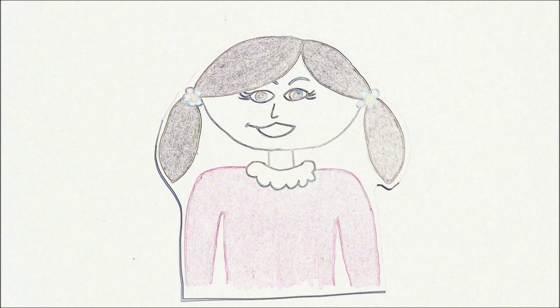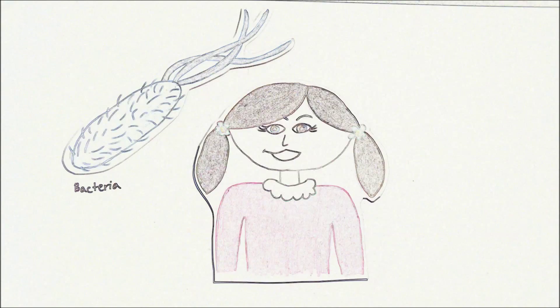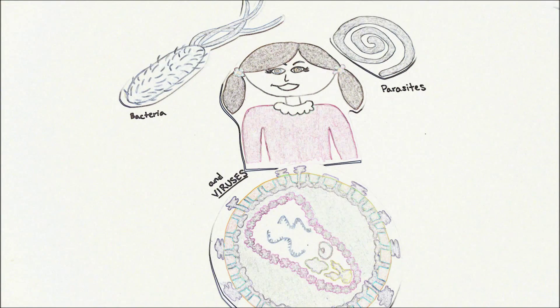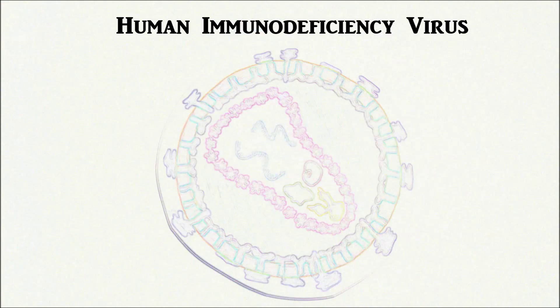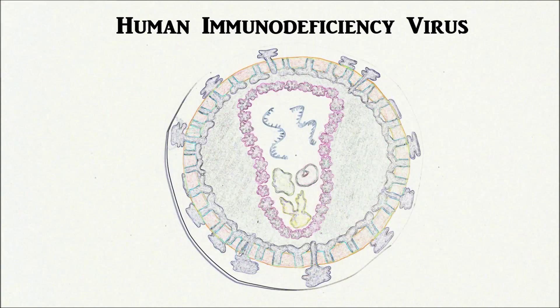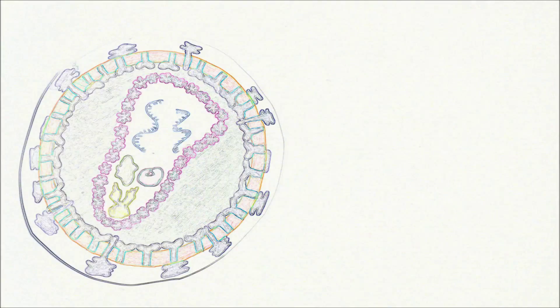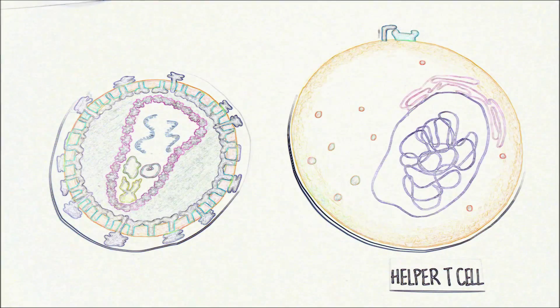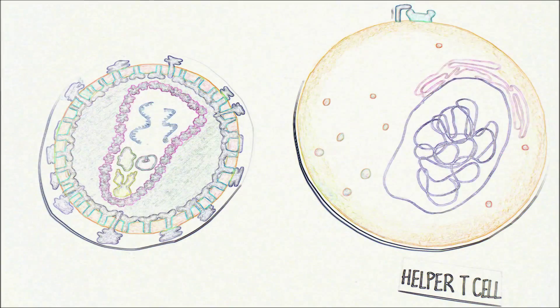Our immune system is necessary for protection from the pathogens that cover everything around us. HIV, or the human immunodeficiency virus, is a retrovirus that infects the important helper T-cells of the immune system.